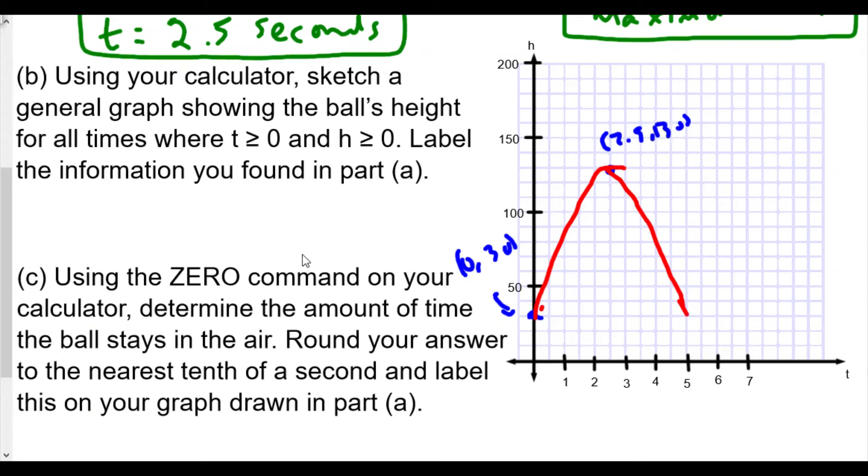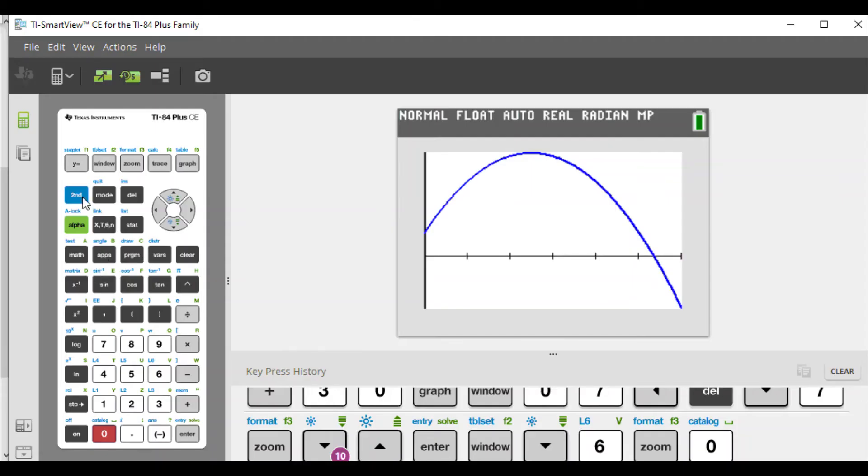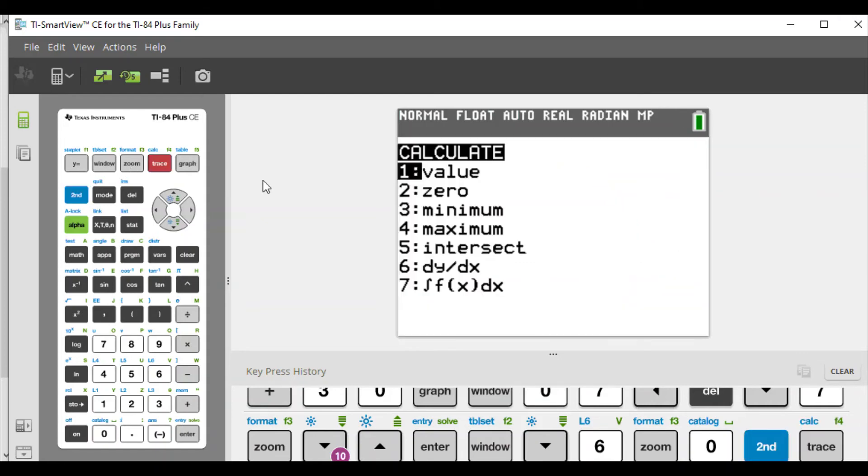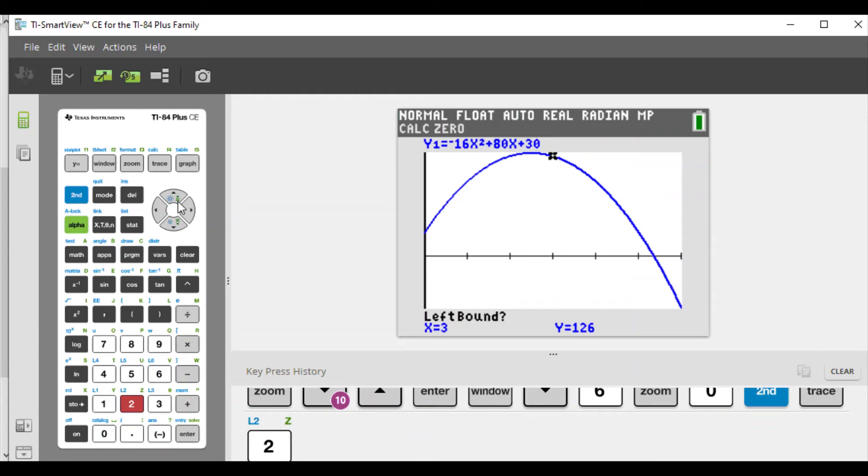We don't know when it reaches zero though. Our next part says use the zero command on your calculator to determine the amount of time the ball stays in the air. Round your answer to the nearest tenth of a second and label this on your graph. So our zero command really is going to be second calc choice two, zero. Now we want to bring our cursor close to the point of intersection. There's no zero when negative because we're not going back in time, so we see only one zero here. I'm going to hit enter, you can get closer if you want, hit enter on this side, hit enter on this side.